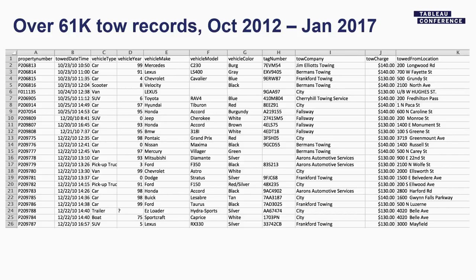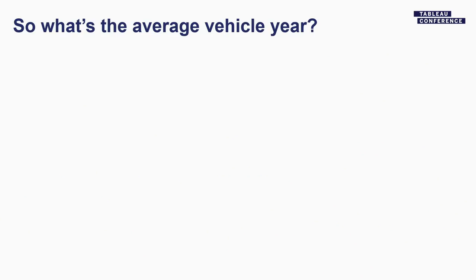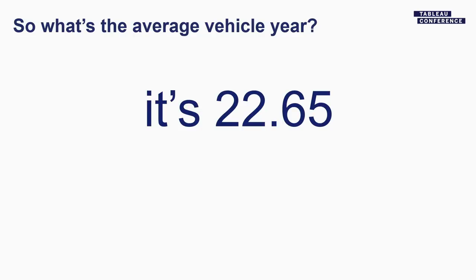I started asking questions. I'm guessing a lot of old cars get towed — they break down more than new cars. So I wanted to know: what's the average year of a car being towed? It turns out if I take the average of the vehicle year column, I get the number 22.65. What? Is it 1922? There aren't even that many cars from 1922 still on the road. It surely isn't 2022, I hope. 22.65 — what does that even mean?